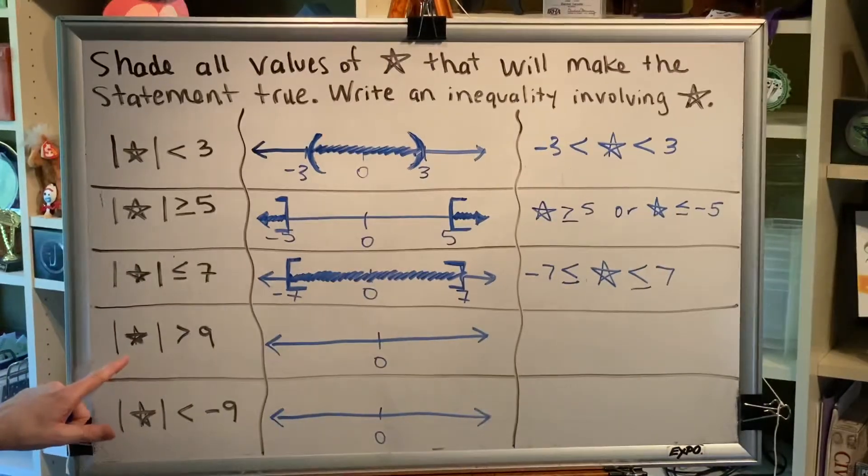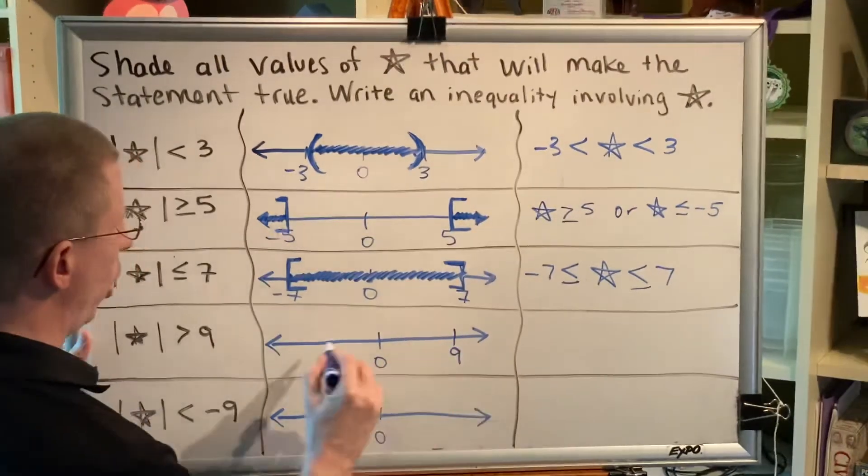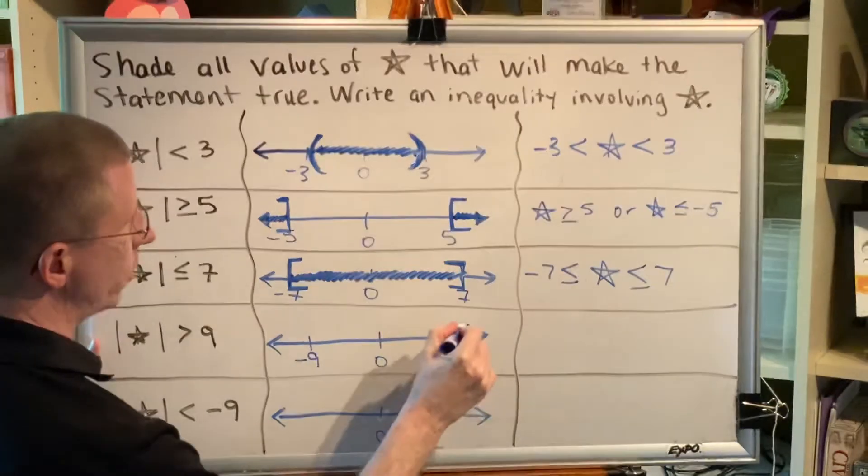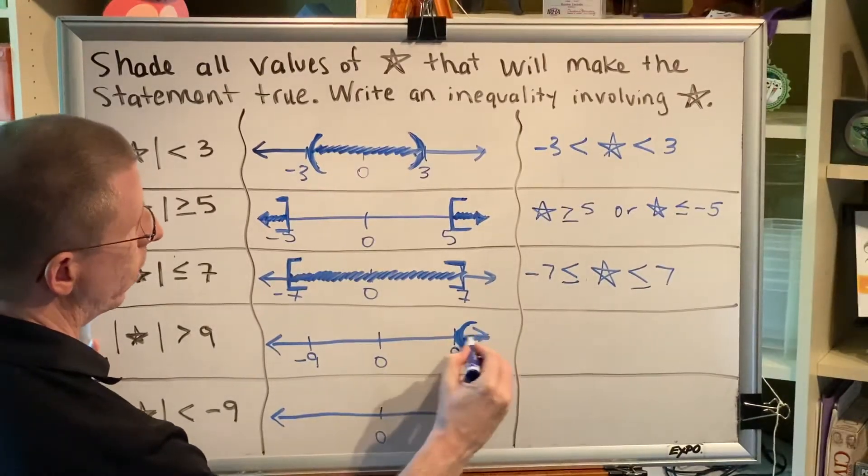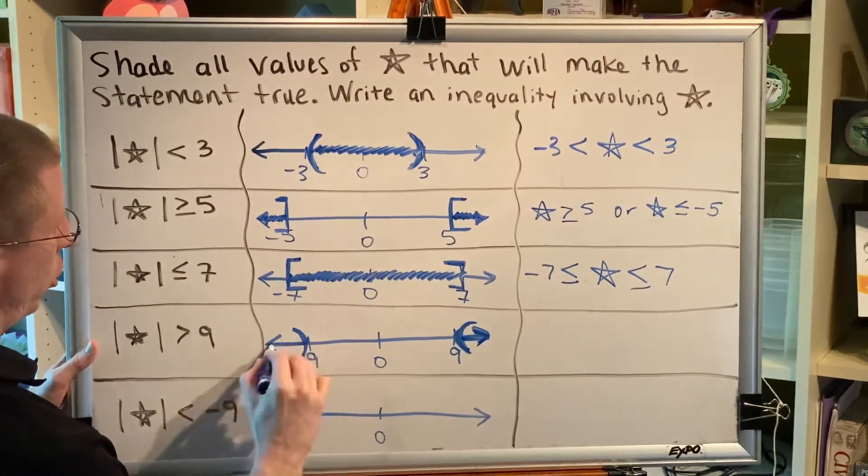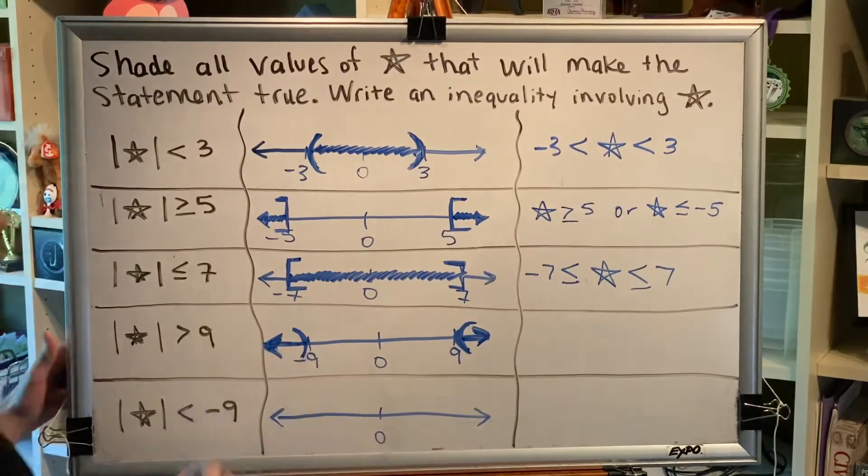Next one. Distance greater than 9. That's like being guarded. Greater than. Guarded. So you can't get too close to 0 because 0 is guarded. You can be over here. You can be over here. But you can't be near 0 because 0 is guarded.